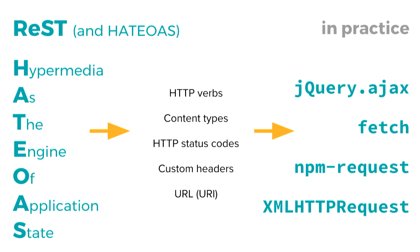In practice it starts to look like this. People may have heard of HATEOAS — hypermedia as the engine of application state — kind of what you think of when thinking of REST. It's how HTTP is used to represent state: HTTP verbs, content types, custom headers, the URL — using HTTP to define your application. In JavaScript, we tap into this system every time we use jQuery.ajax, get, post, fetch — which is the new cool thing — npm request if you're talking server to server, and the old classic XMLHttpRequest. This gets complicated, and every time you make one of these calls you're dropping out of JavaScript and into REST in order to represent the state of your application, which may not be a good idea.